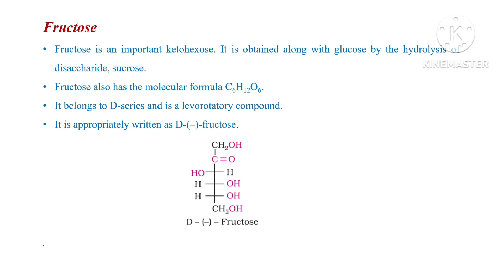The most oxidized carbon in fructose is the ketone carbon. The asymmetric carbon atom farthest from it has the OH group on the right-hand side, making it a D-sugar. The minus sign represents a levorotatory compound, meaning it rotates plane polarized light towards the left (anti-clockwise) direction. Therefore, fructose is written as capital D-minus fructose.